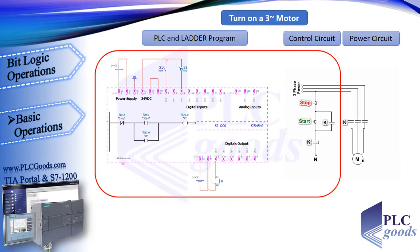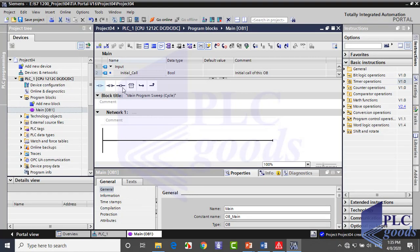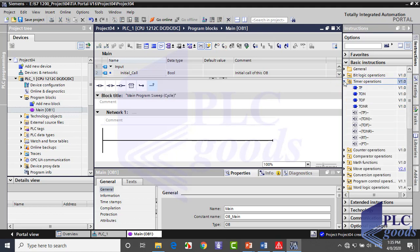If you remember, we did the industrial circuit with this PLC wiring and ladder program. Here we used these ladder instructions. These three instructions, with open and close branch, are frequently used in ladder programming. A complete list of all instructions is shown here in the instructions tab.